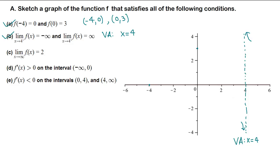When x goes to infinity, the function goes to 2 — meaning the function eventually approaches y = 2 on the right side. This is a horizontal asymptote: HA y = 2. This applies only on the right side, so we draw y = 2 only to the right.